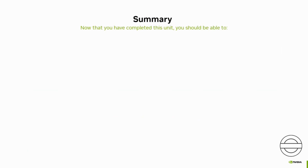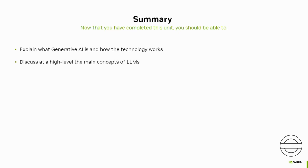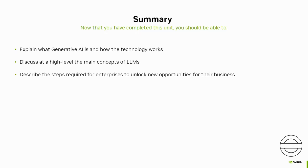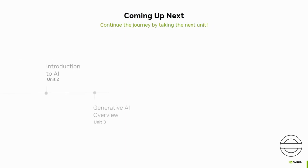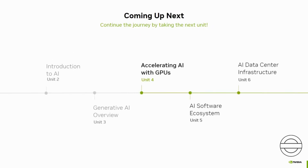Well done on completing this unit. Now that you've finished this unit, you should be able to explain what generative AI is and how the technology works, discuss the generative AI market trends and the challenges in this space with your customers, and describe the steps required for enterprises to unlock new opportunities for their business. You've reached the end of the third unit in the AI Essentials from Concept to Deployment course. In the next unit, we'll explore the acceleration of AI through GPUs.